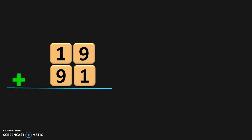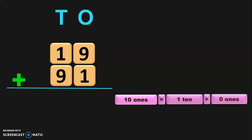Let us do one more example: 19 plus 91. Write down the place values — 1's and 10's. Add the digits in the 1's place. 9 plus 1 will give you 10. 10 1's is equal to 1 ten plus 0 1's. So, write 0 in the 1's place and take the 1 ten as a carryover to the digits in the 10's place.